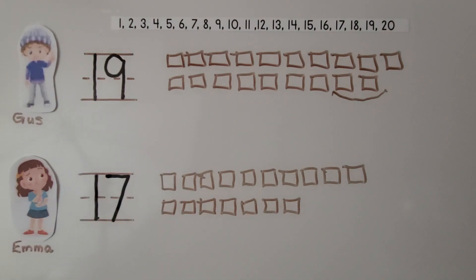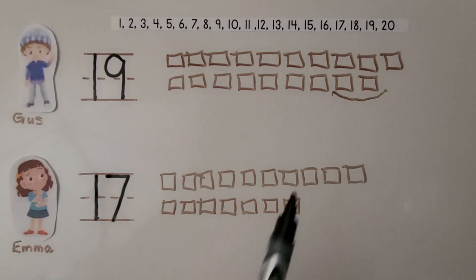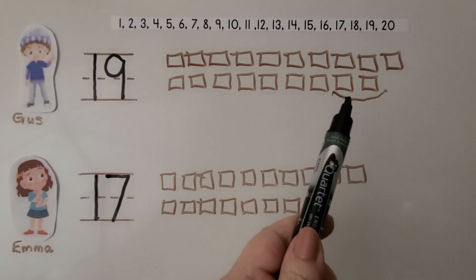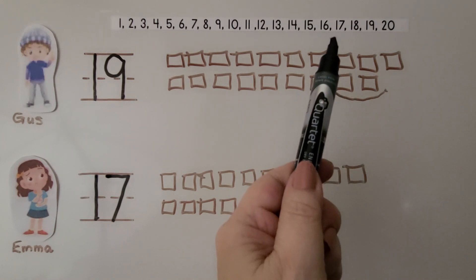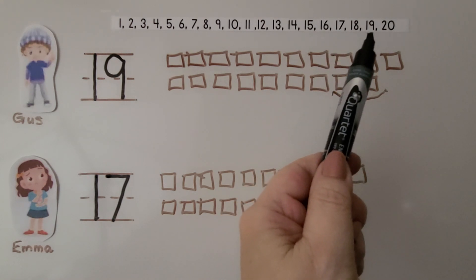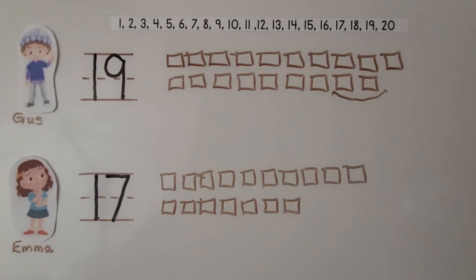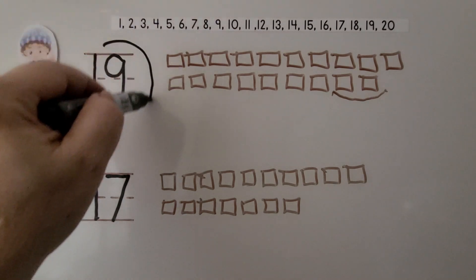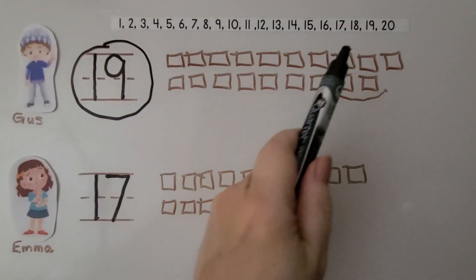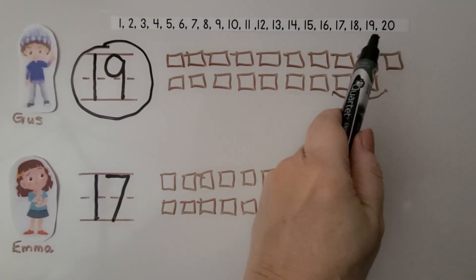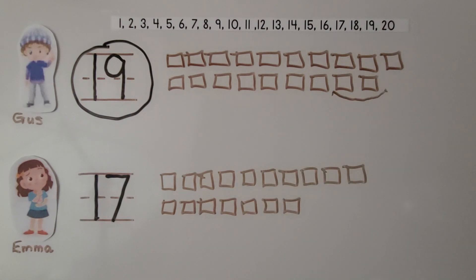We need to circle the greater number. 19 is greater than 17 because there are more cubes. 19 comes after 17 in counting order, and the greater number comes after in counting order. So we circle 19 — it's the greater number.